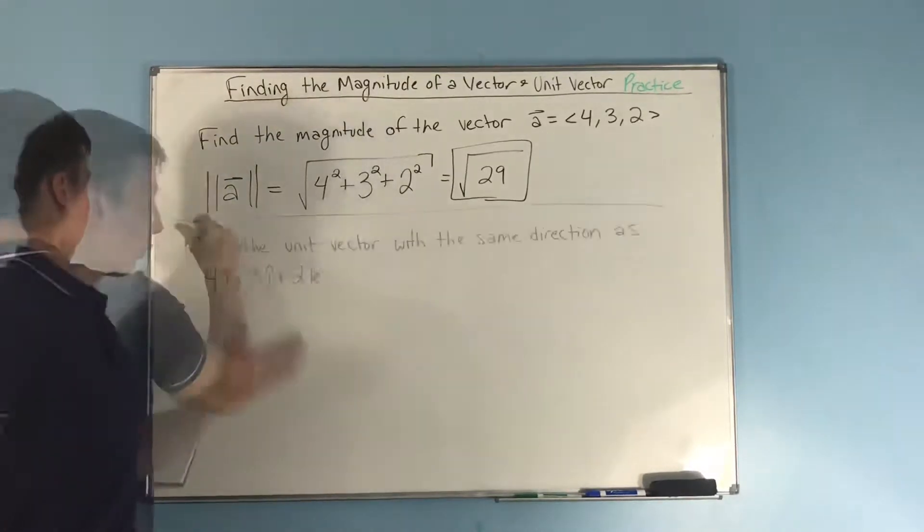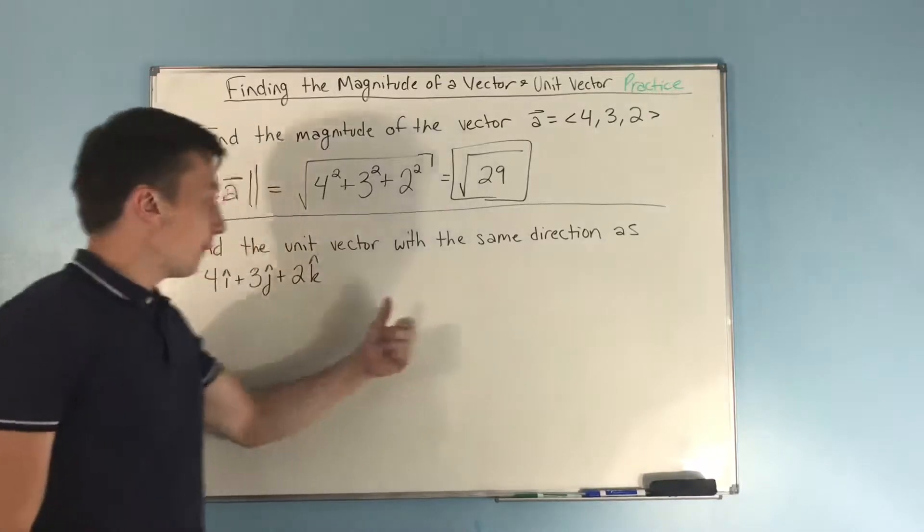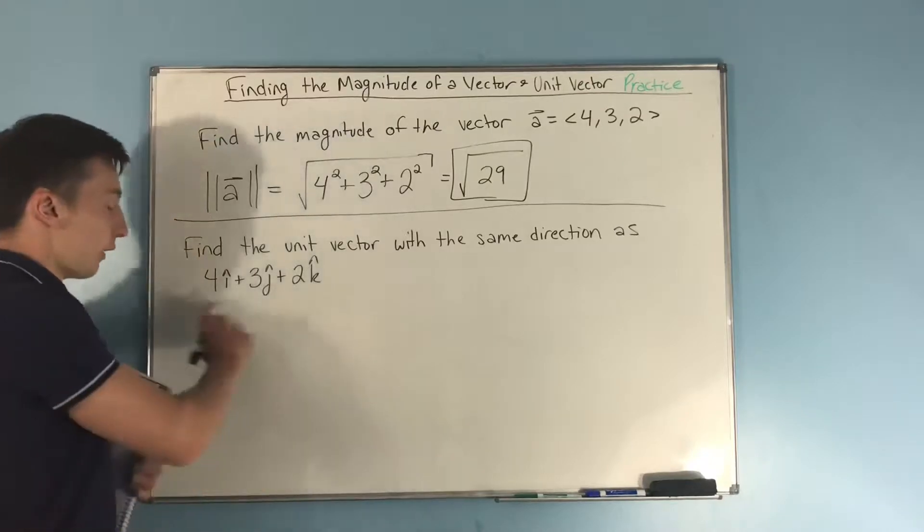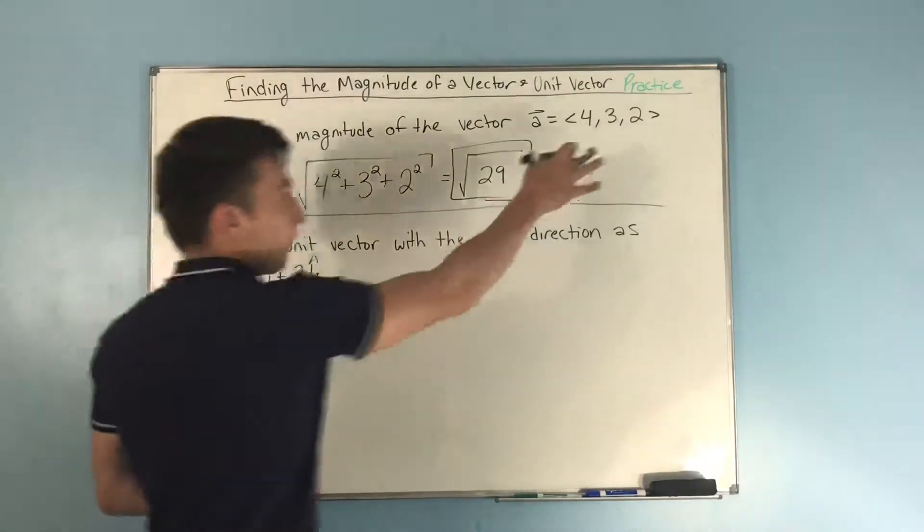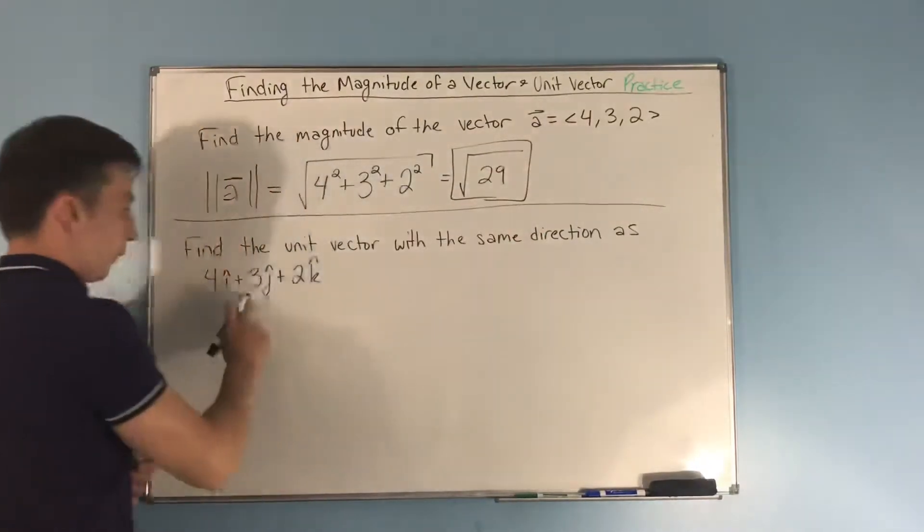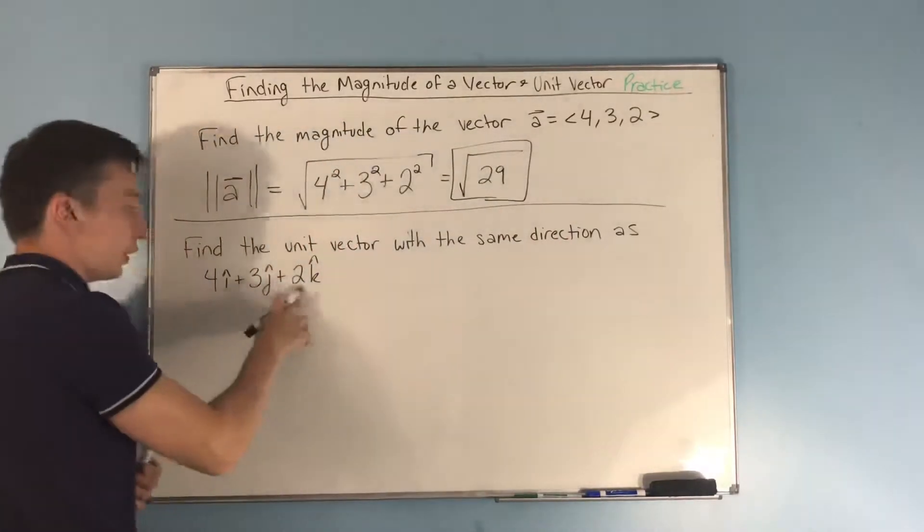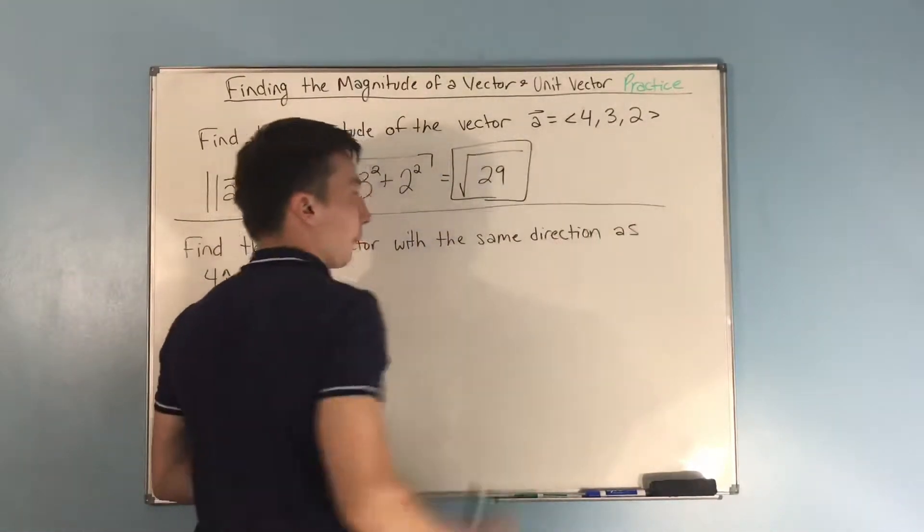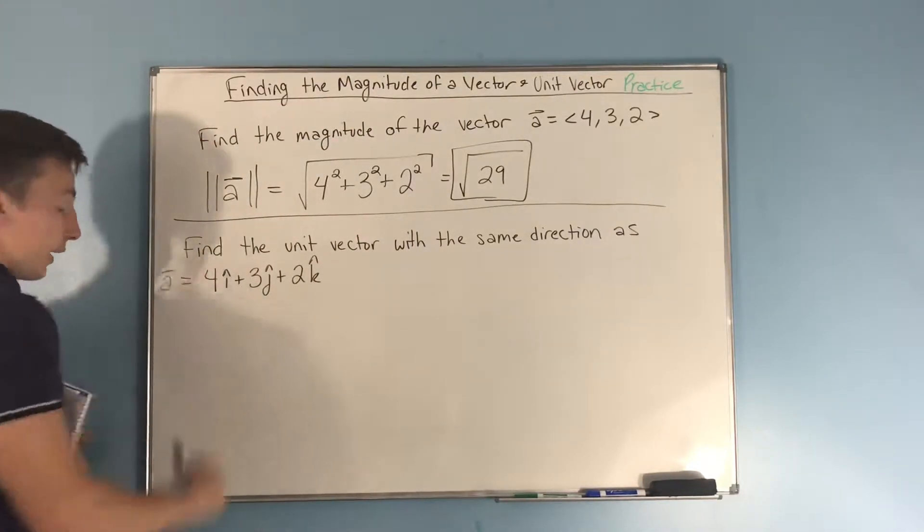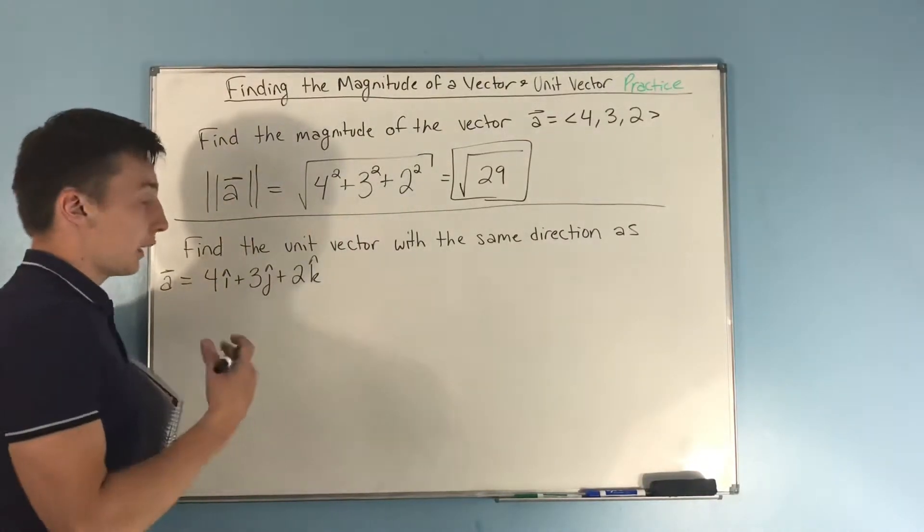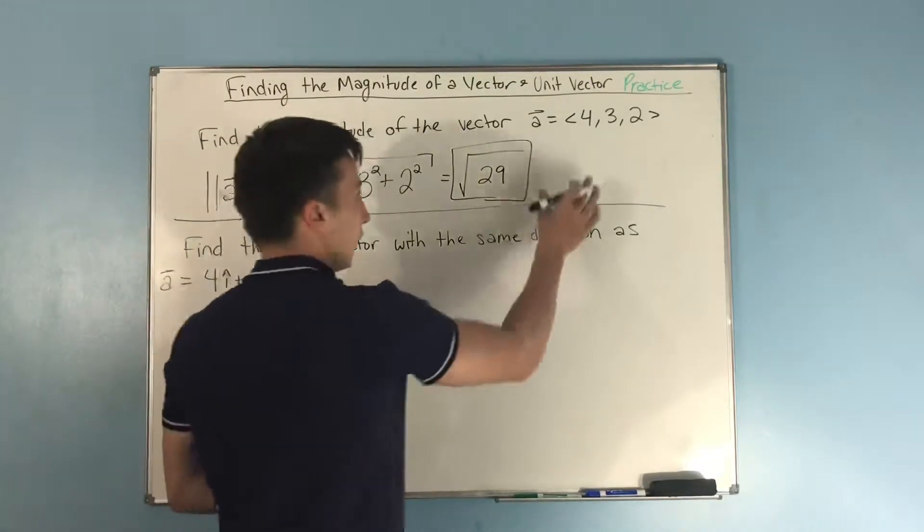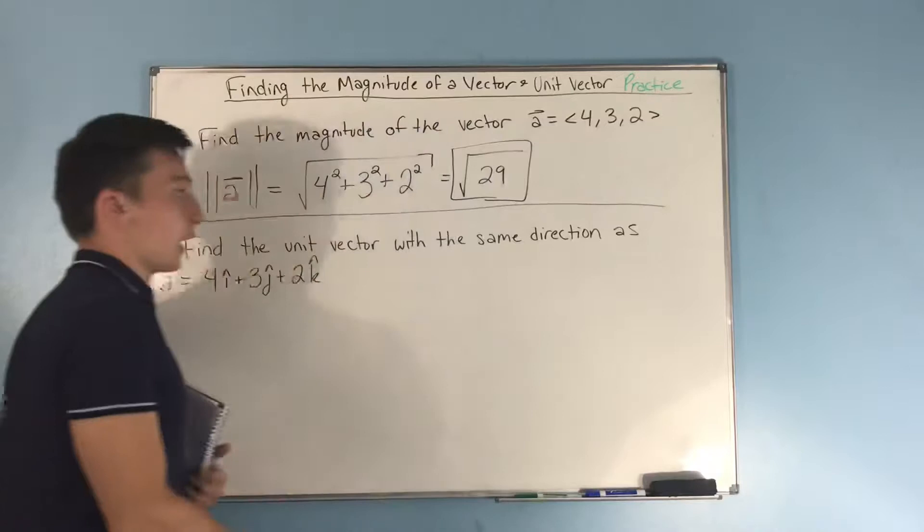Now, next, we want to find the unit vector with the same direction as 4i hat plus 3j hat plus 2k hat. Now, this vector is the same thing as this vector. 4i hat, and you have a 4 here, 3j hat, you have a 3 in your y component, and a 2k hat, that's your z component, you have a 2 right here. So this is still the same thing, this is vector a. Now, I just wanted to make that clear. I want to help you get used to this notation, either the unit vector notation or the angle bracket notation.